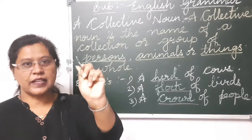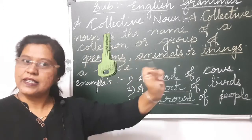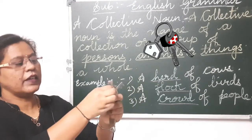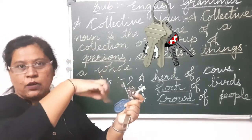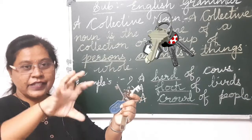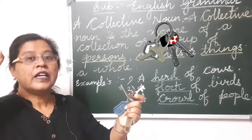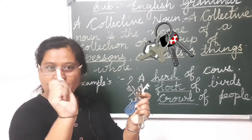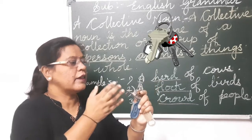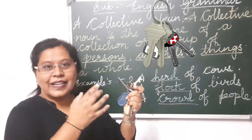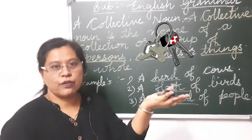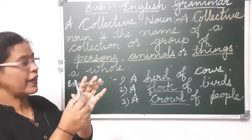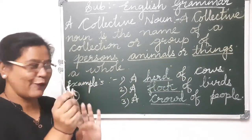For example, I am having with me a key — this is a single key, and we call it a key. But if I have so many keys with me, this group of keys is also given a separate name. English grammar specifies a definite name for each thing. If there are five to six keys, I will not call it just 'a key' — I'll call it a bunch of keys. That bunch is a group, a collection of things.